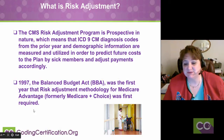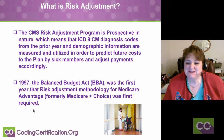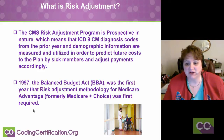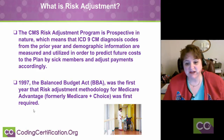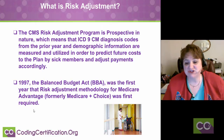The CMS Risk Adjustment Program is prospective in nature, which means that ICD-9-CM diagnosis codes from the prior year and demographic information are measured and utilized in order to predict future costs to the plan by sick members and adjust payments accordingly.